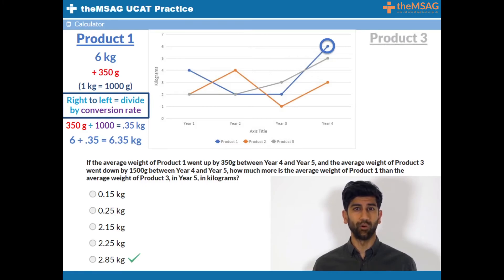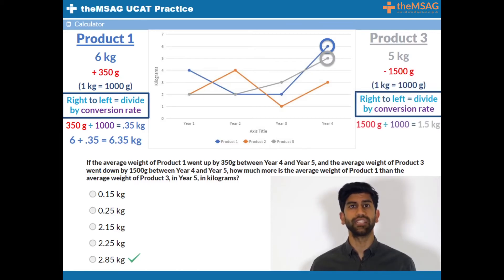Product 3 in year 4 weighed 5 kilograms. This decreases by 1500 grams. 1500 divided by 1000 equals 1.5. Therefore 1500 grams equals 1.5 kilograms. Product 3 weighs 3.5 kilograms in year 5. 6.35 minus 3.5 equals 2.85 kilograms.